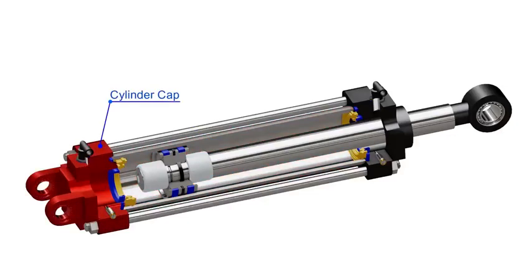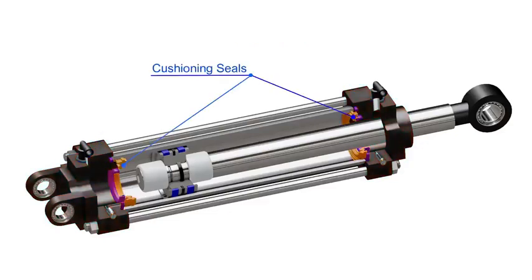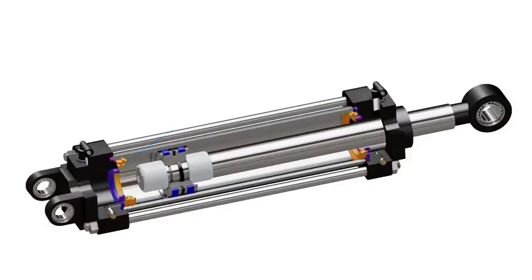A cylinder cap encloses the cylinder chamber at one end, and the cylinder head encloses the chamber from the other end. Cushioning buffers and seals are installed on the respective ends. Captive adjustable cushioning screws are installed on each end, enabling the user to adjust the optimum cushion at the end of the stroke.